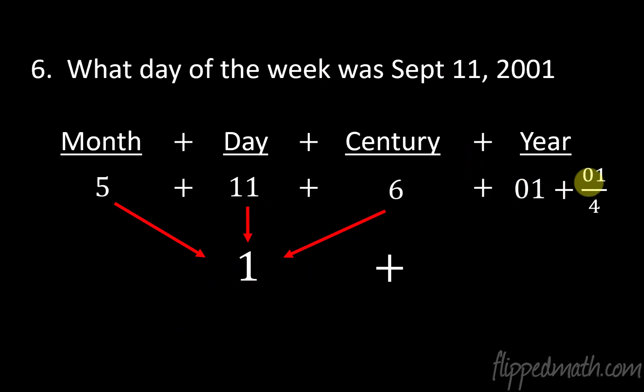All right, and then this 1 plus 0, that's just a 1. So you put it together and you get a 2. You don't even have to divide by 7. This is kind of like redundant. We already know it's going to be a remainder of 7. Excuse me, a remainder of 2. So if it's a 2, what day of the week is that? Tuesday. Monday's a 1, Tuesday's a 2. All right, so September 11th did happen on a Tuesday.